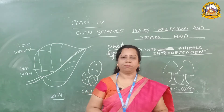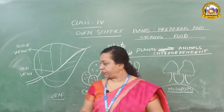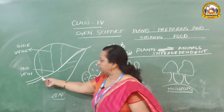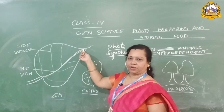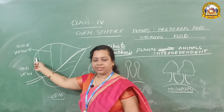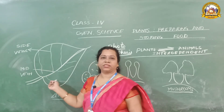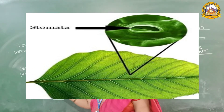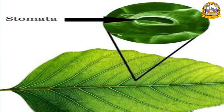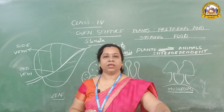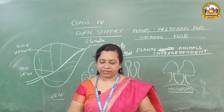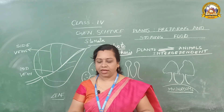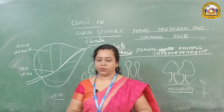The next part is parts of a leaf. This is a leaf. The main vein runs from the start to the end. There are side veins, known as side veins. On the underside of the leaf there are small tiny pores, known as stomata — S-T-O-M-A-T-A. The function of stomata is that during photosynthesis, the leaf takes in carbon dioxide and gives out oxygen and water vapour through these.